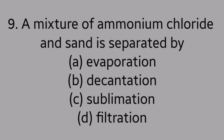Question number 9. A mixture of ammonium chloride and sand is separated by: option A. Evaporation, option B. Decantation, option C. Sublimation, option D. Filtration. Answer is option C. Sublimation.